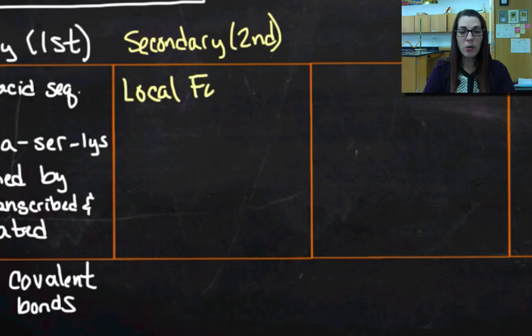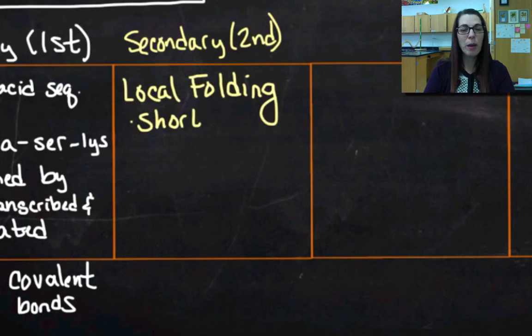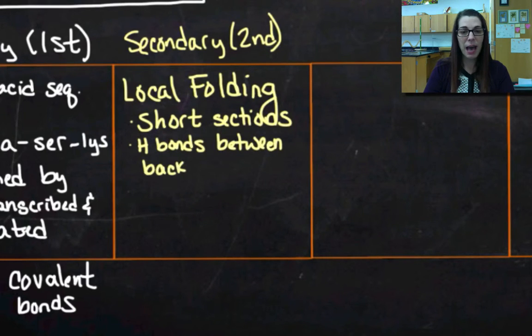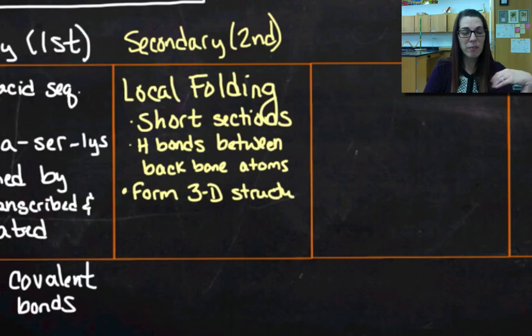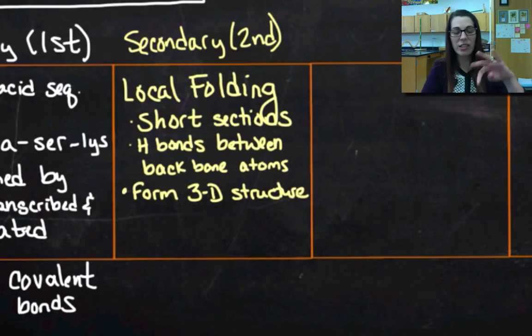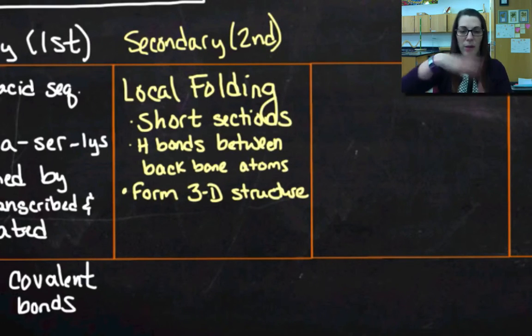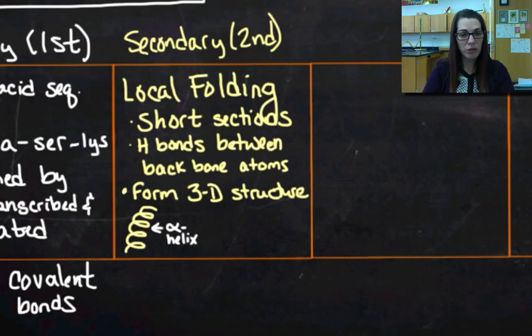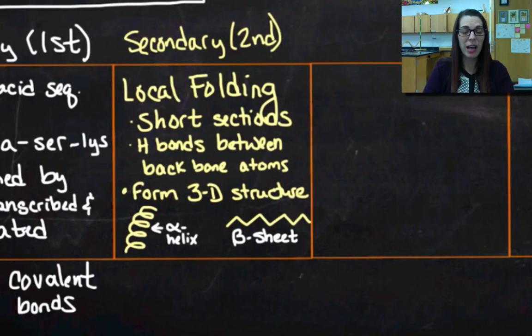My secondary structure is going to be local folding. So I'm looking at really short sections of my protein, and you're going to get hydrogen bonds that happen between the backbone atoms. You're going to get hydrogen bonding between the amino groups and the carboxyl groups, because the molecule kind of becomes polar, and then as it folds up, you're going to get some sections that are positively charged and some sections that are negatively charged. So it's all going to form a 3D structure. It's primarily going to form this corkscrew shape, which we call an alpha helix. And then it's going to form this shape, which is called a beta sheet. Think of it when you take a piece of paper and you fold it up to make a fan. That's a beta sheet. It's actually a beta pleated sheet, but sheet is fine.